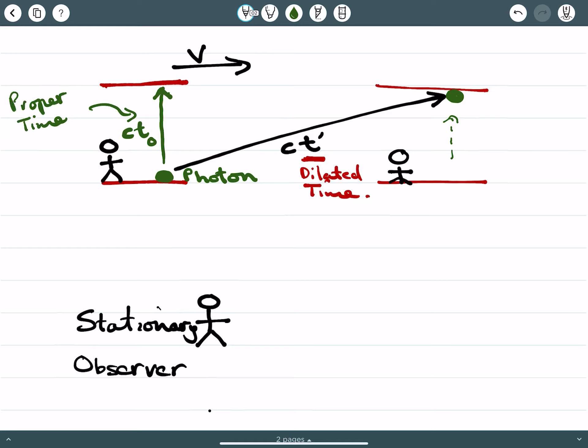Proper time because obviously the person within the moving frame of reference is observing the photon moving up and down, no non-inertial frame of reference from their standpoint within that moving frame. Therefore, it's considered proper time.